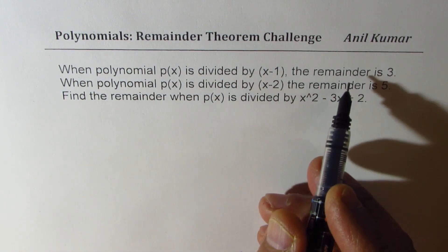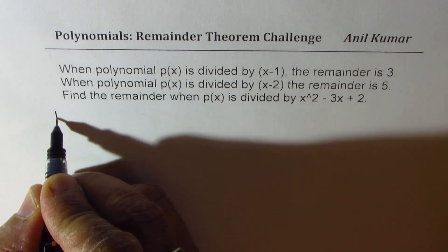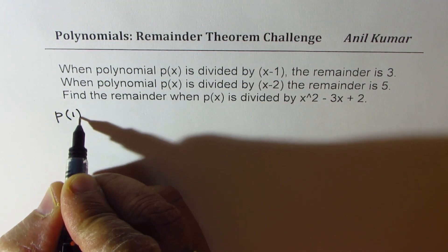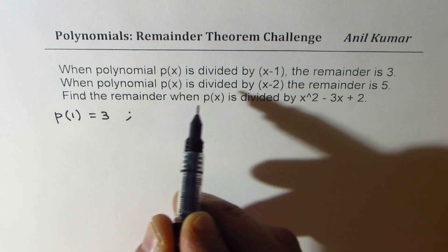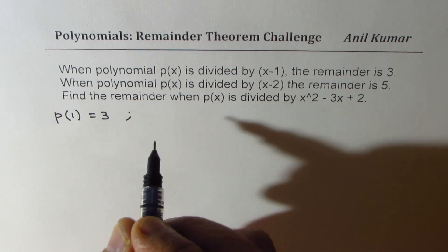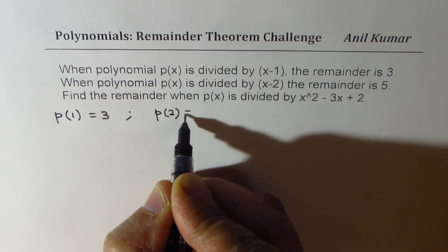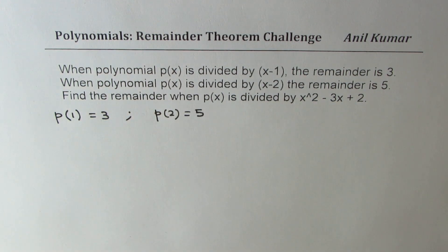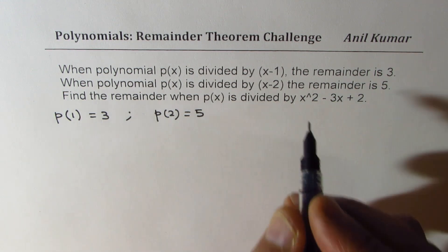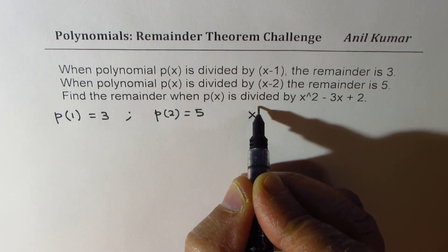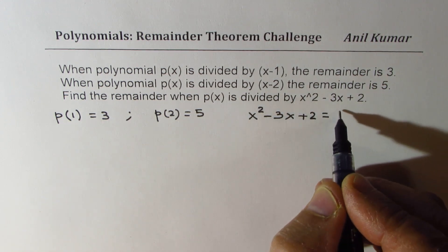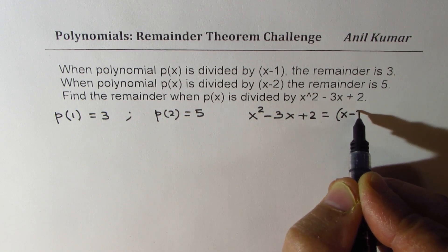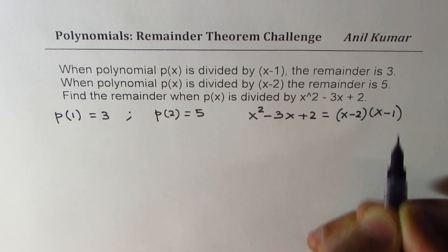The first statement says when polynomial p(x) is divided by (x-1), remainder is 3. It means the value of polynomial at 1 is 3. When we say that the polynomial is divided by (x-2), remainder is 5, that means p(2) is 5. Now we need to find the remainder when it is divided by the quadratic term x² - 3x + 2, which could be factored as (x-2)(x-1).